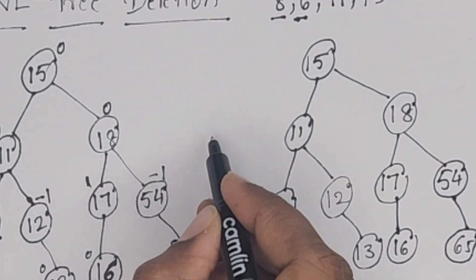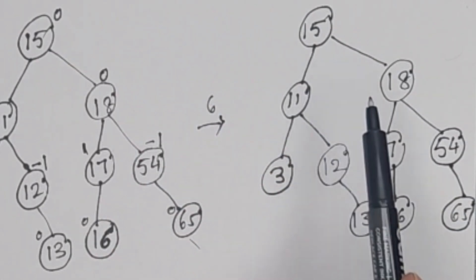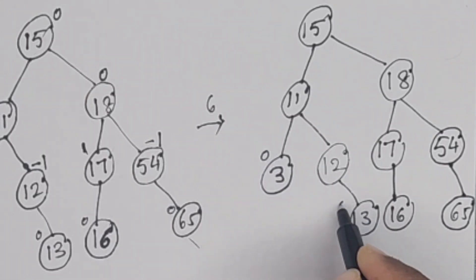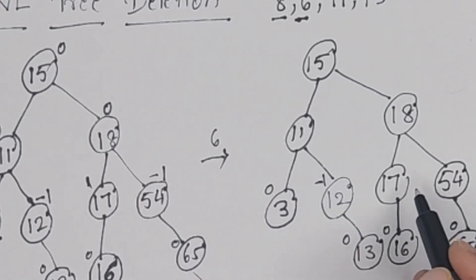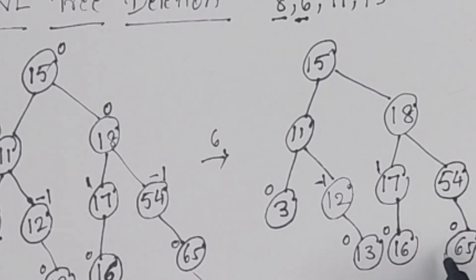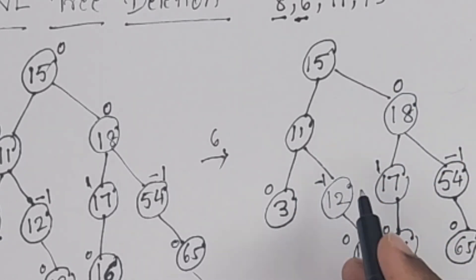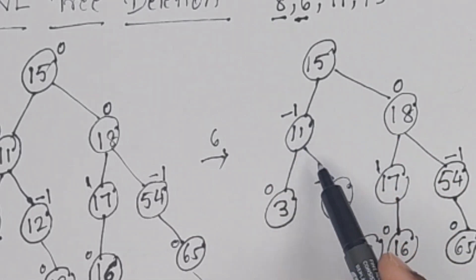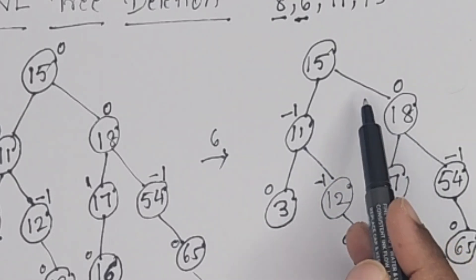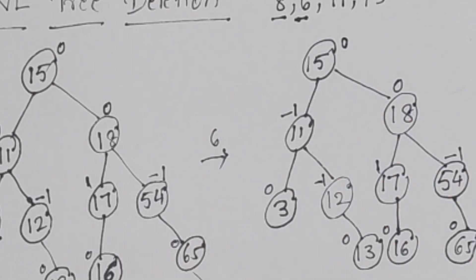This is the AVL tree after deleting element 6. Once again, we have to write balance factors. All leaf nodes have balance factor 0. For node 12: 0 minus 1 = minus 1. For node 17: 1 minus 0 = 1. For node 54: 0 minus 1 = minus 1. For node 18: 2 minus 2 = 0. For node 11: 1 minus 2 = minus 1. For node 15: left subtree height 3, right subtree height 3, so 3 minus 3 = 0. The tree is balanced again.